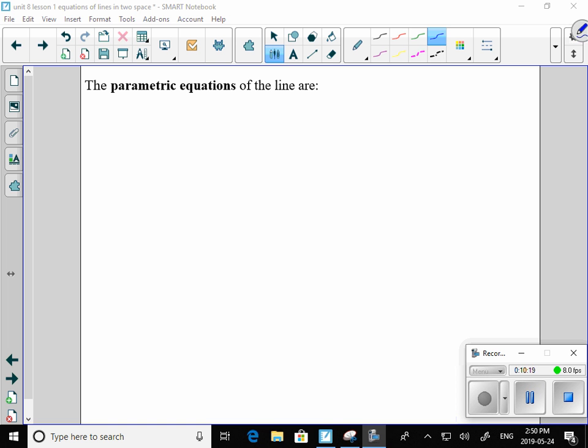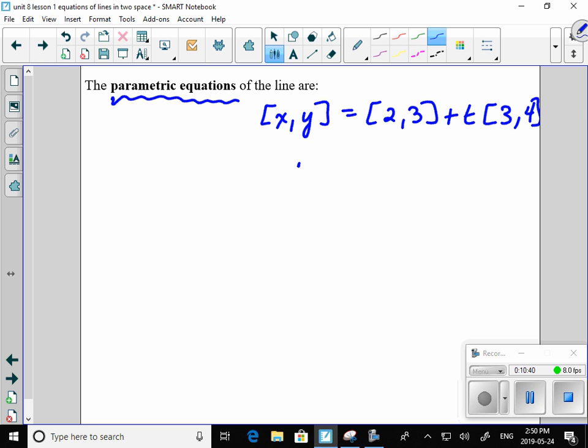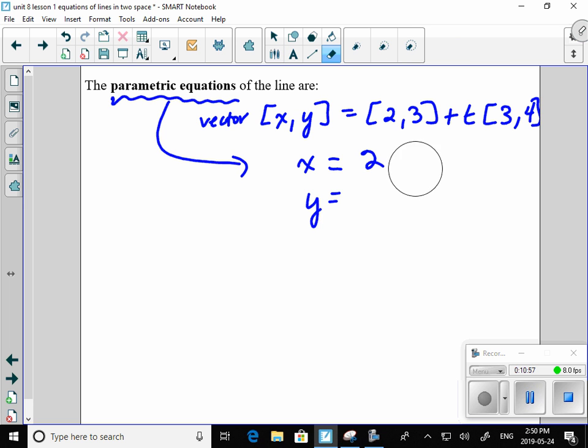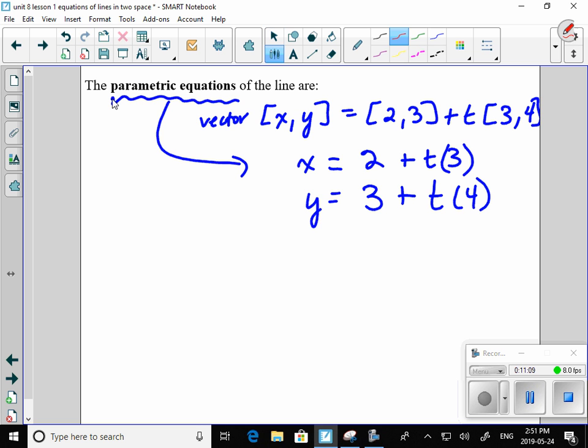From the same line, we have another type of equation of a line. That's where I take my vector equation. And I just separate the bits. So parametric, so this is vector. This is parametric. I separate the x and the y. So I have two different equations. I have x equals 2 plus t times 3. And for the y component, I have 3 plus t times 4. So two different equations for the very same line.